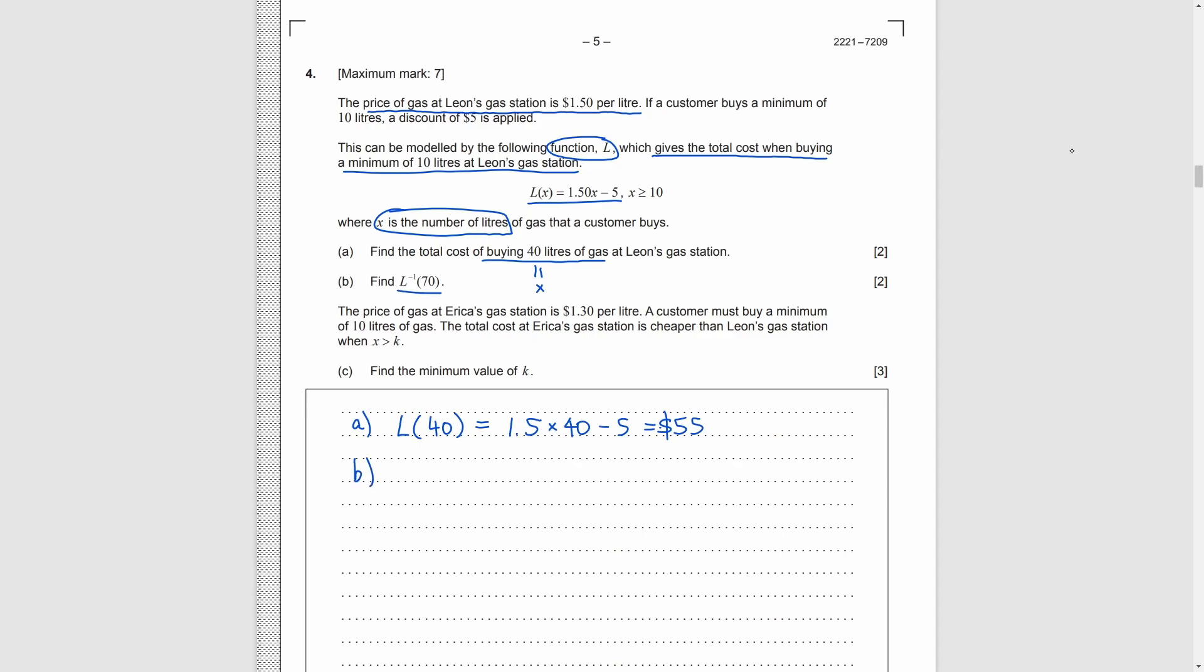Part B, we want to find L inverse 70. Inverse function means that we need to reverse the process of the function L. Now, we have the output 70, and we need to find the input x. So, we just need to set L to be 70, and solve for x. And we get x equals 50.